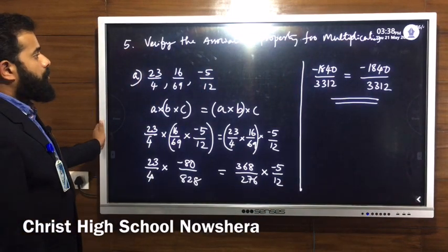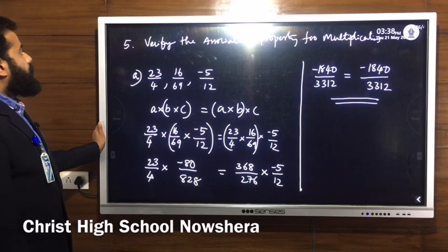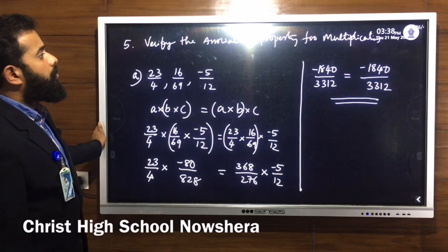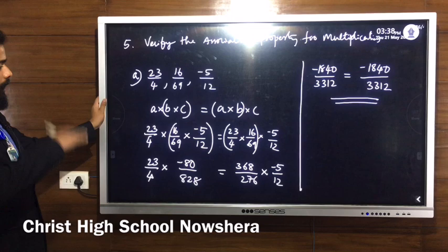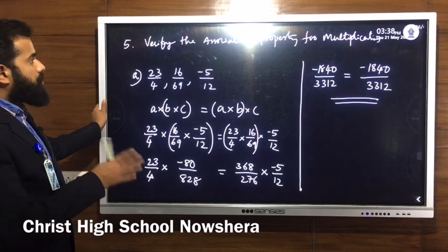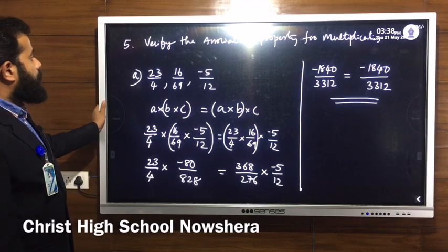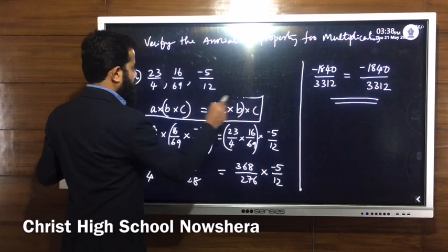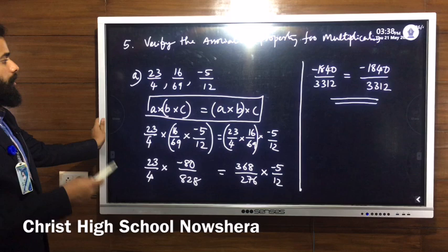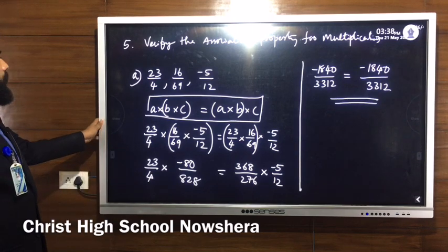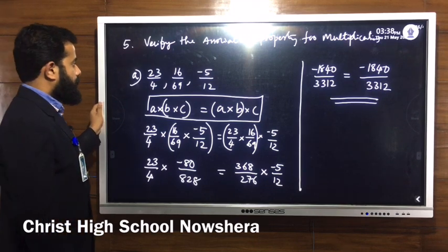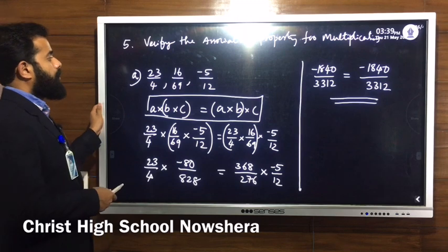The remaining parts you can try by yourself. Question number 5: verify the associative property for multiplication. The general form is A into (B into C) equals (A into B) into C. These are the three rational numbers: 23 by 4, 16 by 69, and minus 5 by 12.